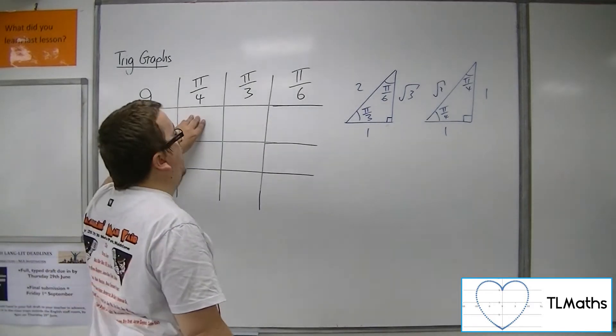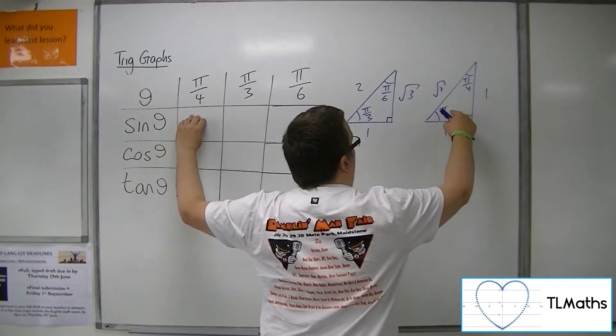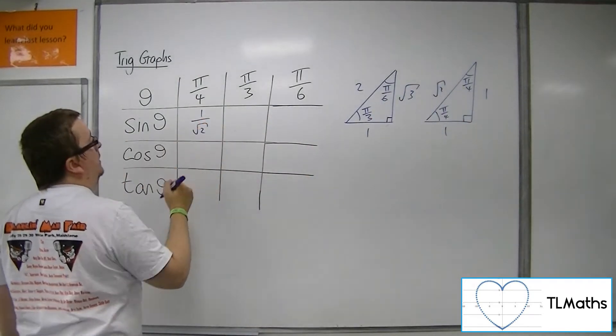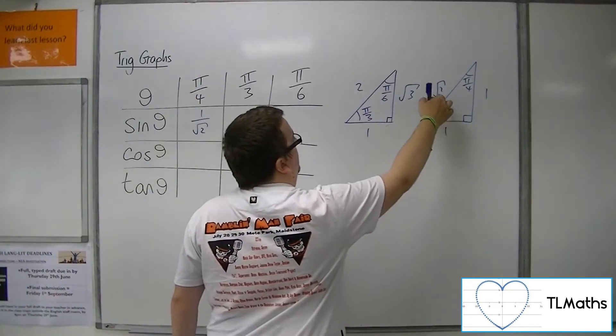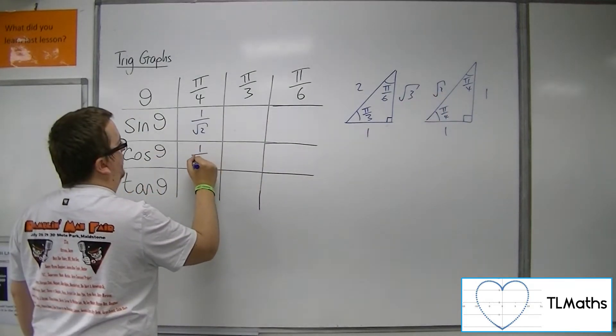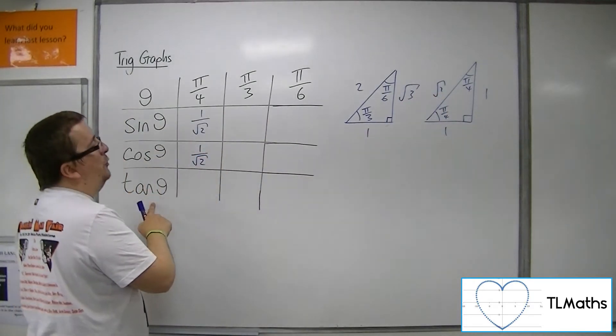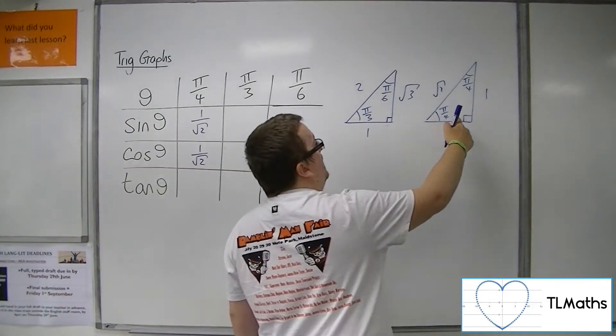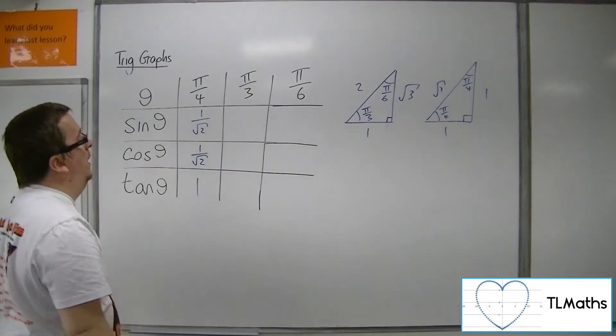So sine of pi over 4, pi over 4 is opposite over hypotenuse, so 1 over root 2. Cosine is adjacent over hypotenuse, so also 1 over root 2. Tan of pi over 4 is opposite over adjacent, so 1 over 1 is just 1.